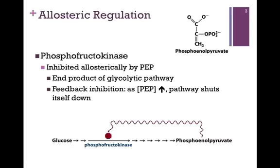As the concentration of PEP increases, it binds to phosphofructokinase and inhibits its activity, illustrated by our traffic signal colors — red indicating stop or inhibition. In other words, the product of the pathway feeds back to an earlier step in the pathway to inhibit that enzyme. In essence, the pathway shuts itself down.